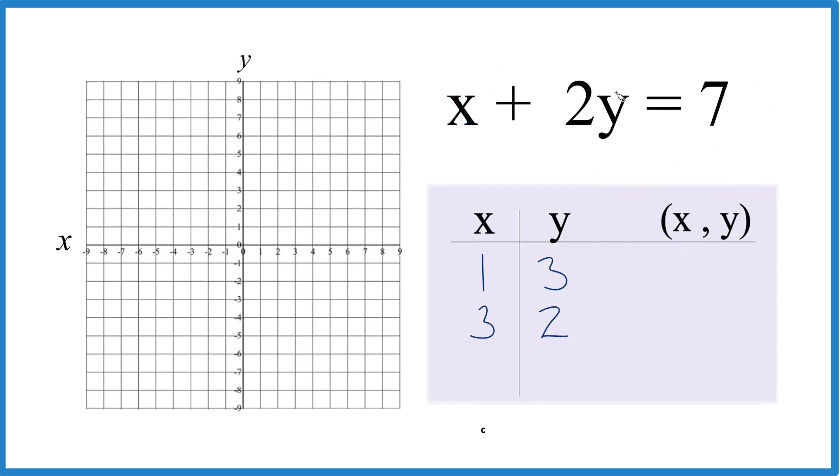Then why don't we just put 0 in for y? We'll just say y is 0 because 2 times 0, that's 0. So x equals 7. Just put a 7 there.